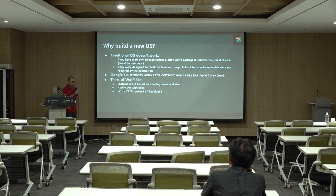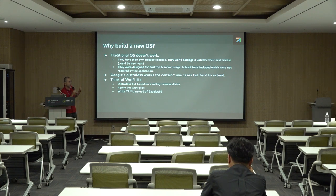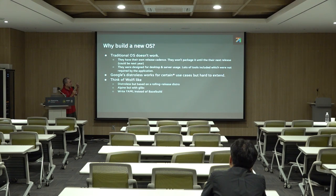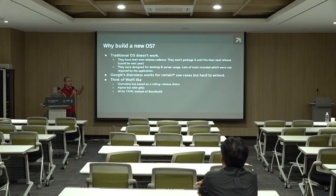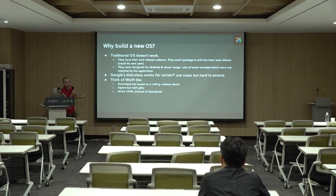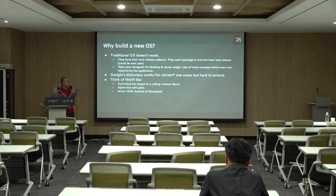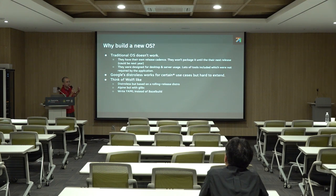Why do we need to build a new OS? The first reason is that the traditional OS doesn't work. When you talk about traditional OS, you mean something like Ubuntu or Debian. Why doesn't it work? Because they have their own release cadence. When a new vulnerability, a new CVE comes in, they will not release the image right away — they have their own release cadence, like every three months, every six months, or maybe once a year. They won't package the patch or the fix until their next release, which could be next year. Also, they were designed for desktop and server usage, which is different from our use case. A lot of tools are included that you don't need, and for new tools to be included in the OS, it can take a long time.